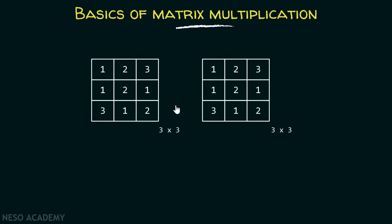Suppose we have these two matrices and we want to multiply them. Before multiplying, one important fact about the resultant matrix: the size of the resultant matrix always depends on the number of rows of the first matrix and the number of columns of the second matrix. In this example, the number of rows of the first matrix are three and the number of columns of the second matrix are also three. Therefore, the size of the resultant matrix will be three cross three.